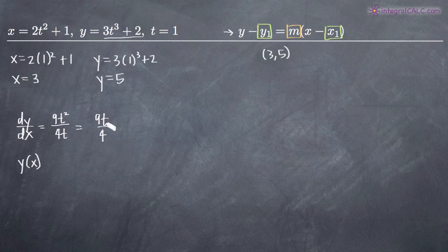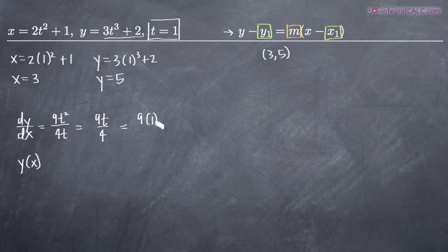In order to completely eliminate the parameter, we plug in 1 for t since we've been asked to find the tangent line at that point. We get 9 times 1 over 4, which gives us 9 fourths. That is the slope of our tangent line, m.